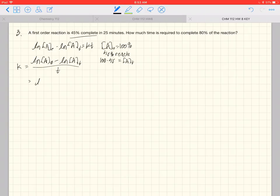So if we plug all these in, we have the natural log of the amount initially, which is 100, and if 45% goes away or reacts, it means that 55% of it is remaining. That's the concentration or the amount. And we divide that by the time. It says 25 minutes here.